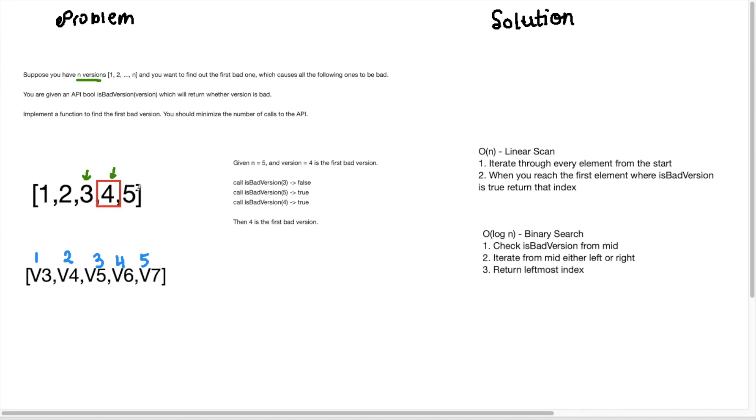And if I called is bad version five it would give me true. So what we need to find is where did our first bad version start. So in this case that would be four.